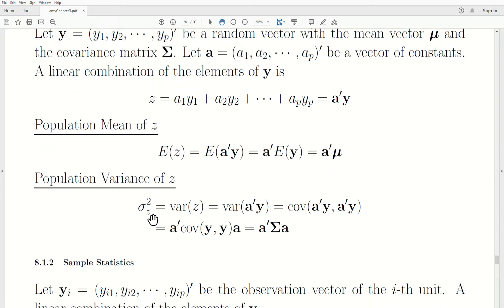Now, the variance, population variance of Z, we call the variance of Z. And then, we replace what Z is, A transpose Y. And then, when we have something like this, I always like to convert it to transpose. Whenever we're dealing with vectors and matrices, the variance is really the covariance of itself. Now, co means two, so we're covariating this or finding the variance.